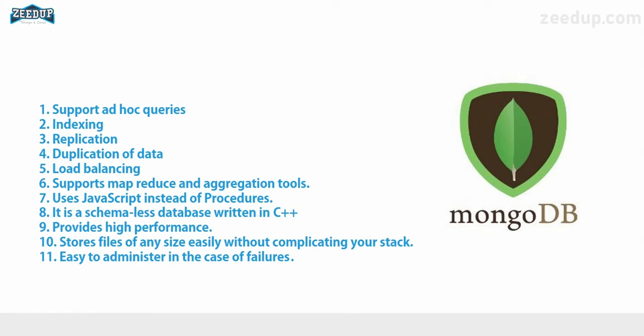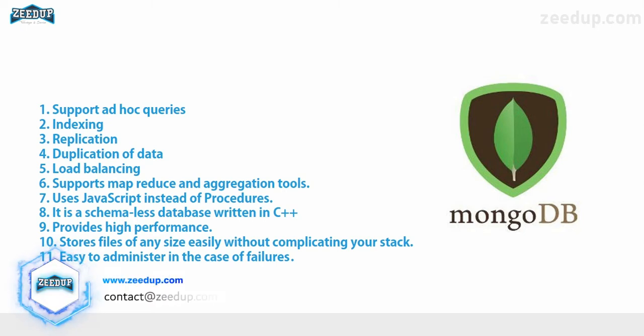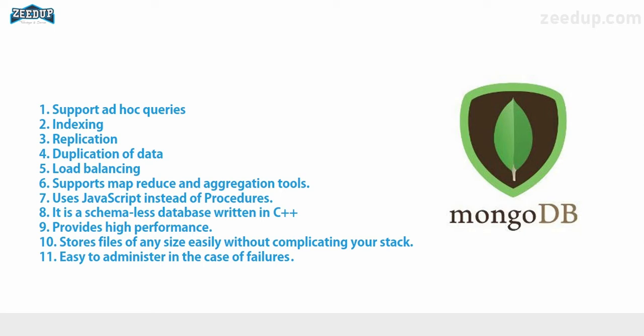MongoDB can run over multiple servers. Data created on one server can easily be duplicated onto other servers so that the system keeps running in case of any hardware failure. Additionally, everyone working on different servers can access the same database regardless of the server's location or where the data is stored.